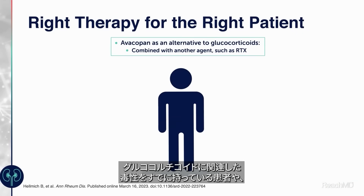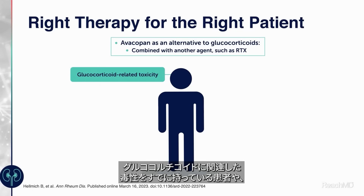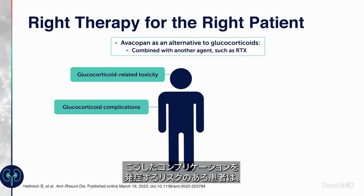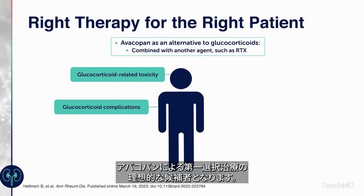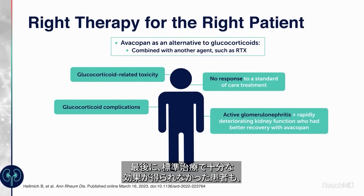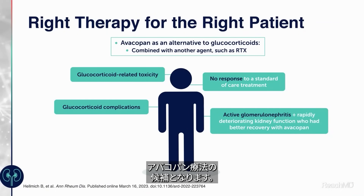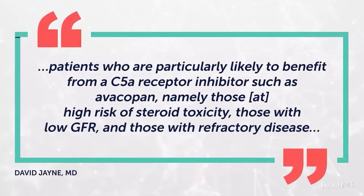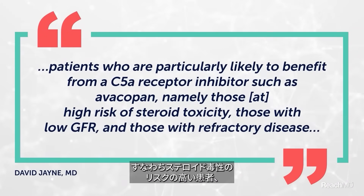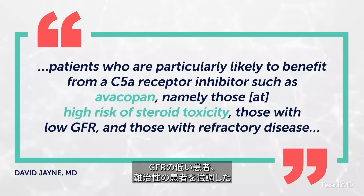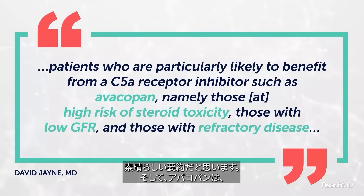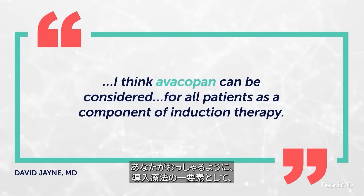For treatment with Avacopan, patients who already have glucocorticoid-related toxicity or who are at risk of developing these complications are the ideal candidates for first-line treatment with Avacopan, always in combination with another agent like rituximab. Patients who have not adequately responded to standard-of-care treatment may also be candidates. Those particularly likely to benefit include patients at high risk of steroid toxicity, those with low GFR, and those with refractory disease. Avacopan can be considered for all patients as a component of induction therapy, and the patient voice is important in the eventual treatment decision.